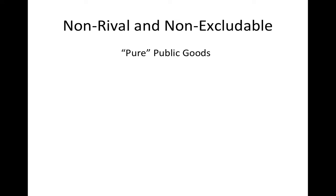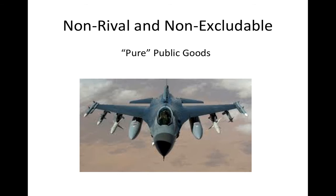Goods which are both non-rival and non-excludable are pure public goods. The classic example is national defense. National defense is non-rival because everyone in the country enjoys the same level of protection. It is non-excludable because it is not possible to prevent people from enjoying this protection, regardless of whether they pay taxes or not.